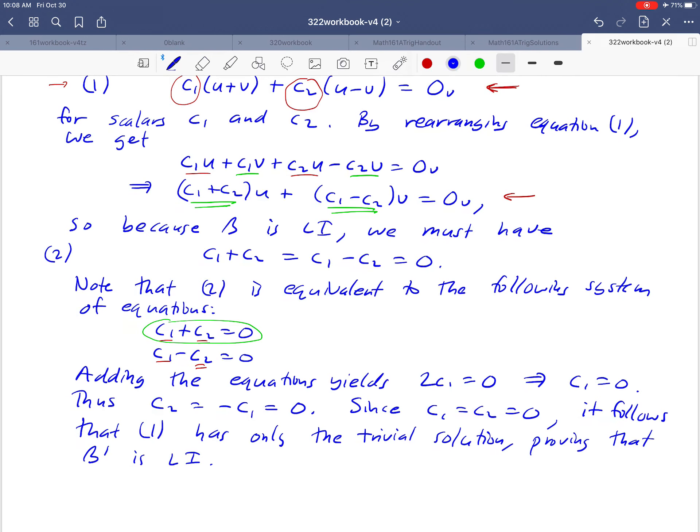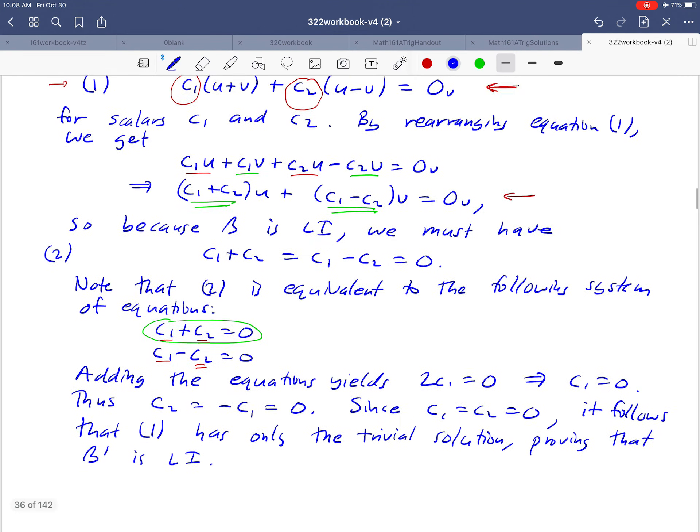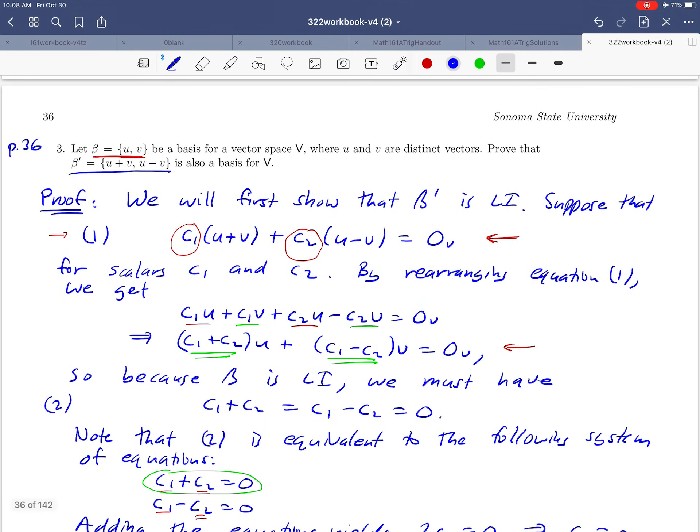Now let's pause to get our bearings. What were we trying to prove? We wanted to prove that β' is a basis. We just proved half of that—we proved that β' is linearly independent. What's the other part of the definition of a basis? That β' is also a generating set.